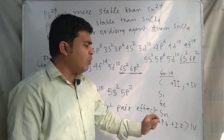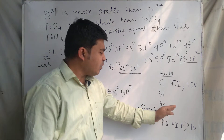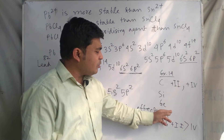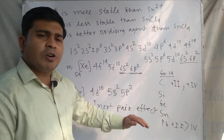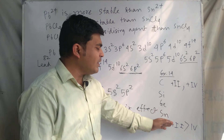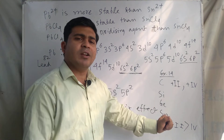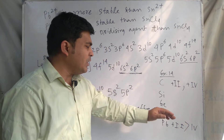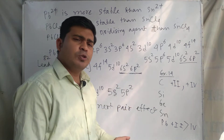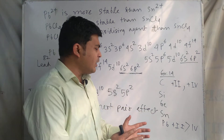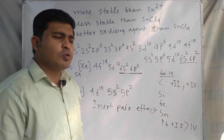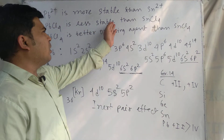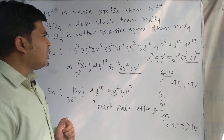Since the +2 oxidation state stability is greater for the lower member of the group, comparing tin and lead, the +2 oxidation state is more stable in case of lead than in tin. For this reason, lead metal in the +4 oxidation state easily gets reduced — gaining electrons and changing from +4 to +2. So PbCl₄ is less stable than SnCl₄.